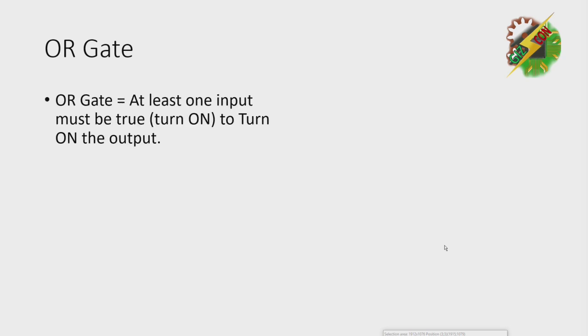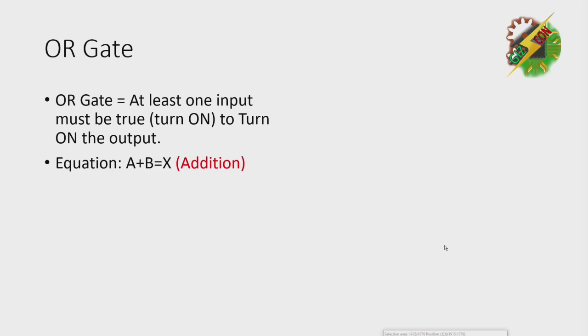Next, we have the OR gate. What is an OR gate? OR gate: at least 1 input must be true or turned on to turn on the output. The equation is A plus B equals X.